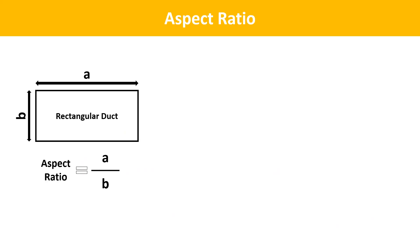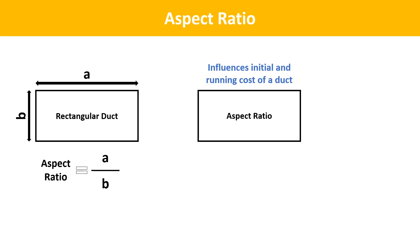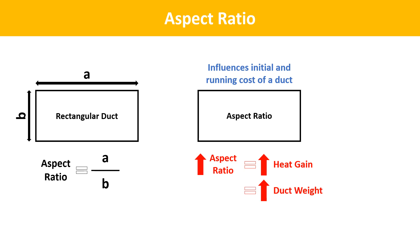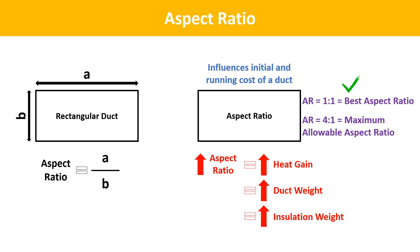The next term is Aspect Ratio. It is defined as the ratio of the long side to the short side of a rectangular duct. Aspect ratio is a major factor which influences the initial and running cost of a duct. As it increases, the heat gain by the duct also increases. If aspect ratio increases for a fixed duct area and capacity, the weight of duct material and weight of insulation also increases.